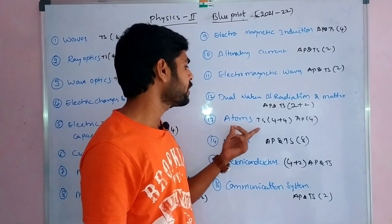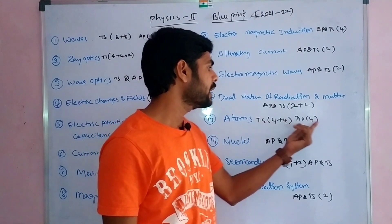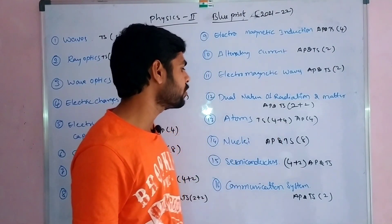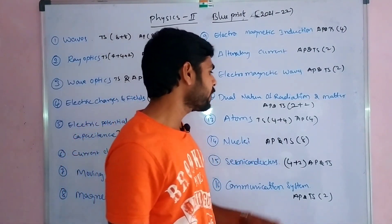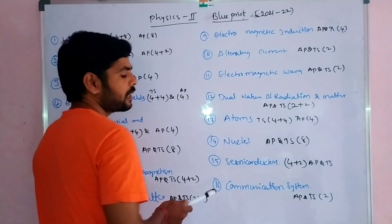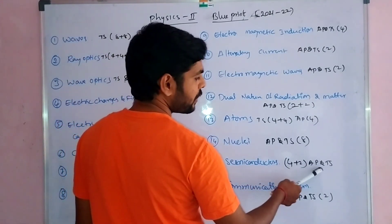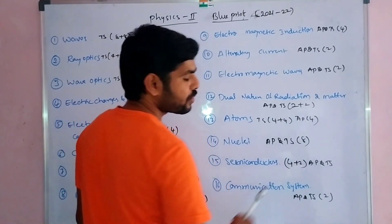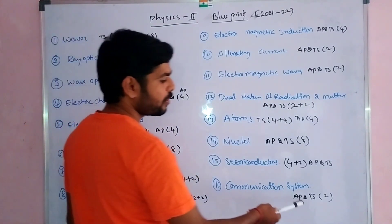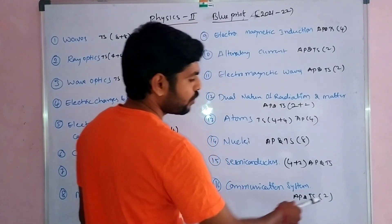In the Atoms lesson, Telangana has 4-mark questions and AP also has 4-mark questions, giving 8 marks total. For the Nuclear lesson, there is a long answer question, and AP and TS are the same. For Semiconductors, AP and TS are the same with 4 plus 2 marks. For Communication Systems, both AP and TS have 2-mark questions.